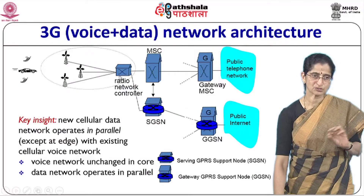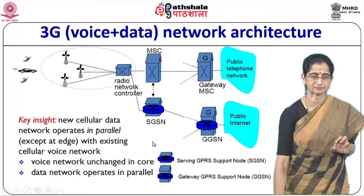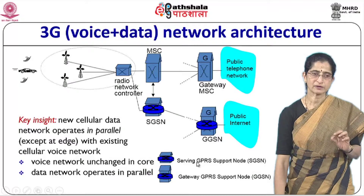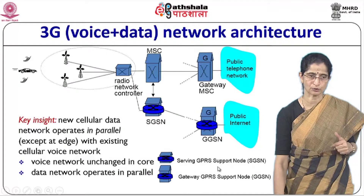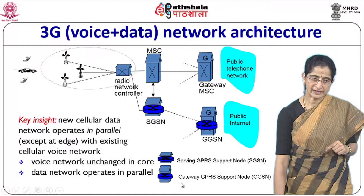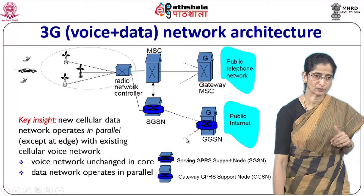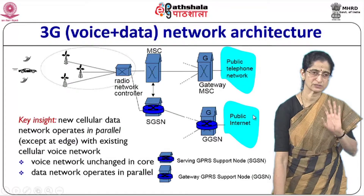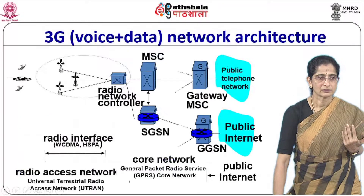The voice part is connected to the public telephone network; the data part is connected to the public internet. The base station controller is called a radio network controller (RNC). This RNC is connected to the MSC and also to the SGSN — the Serving GPRS Support Node. The SGSN is in turn connected to the GGSN, which is the Gateway GPRS Support Node, and that connects to the public internet. The voice network is unchanged from 2G, and the data network operates in parallel.